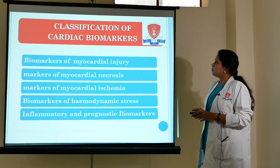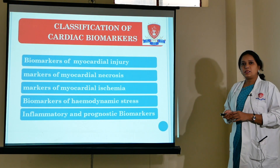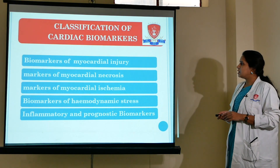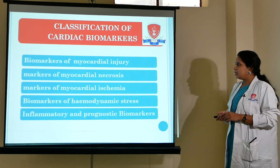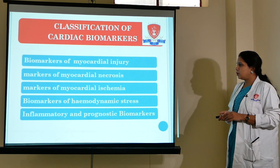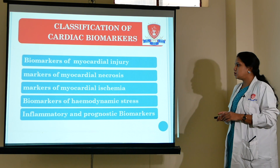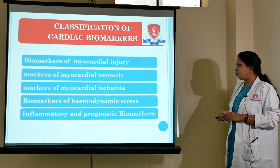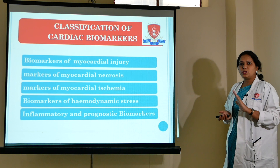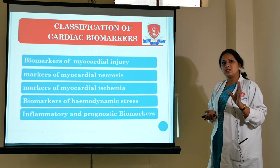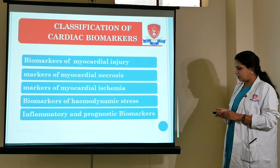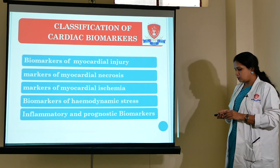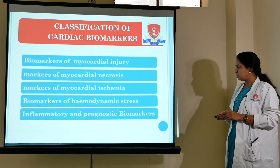Classification of cardiac biomarkers: they can be categorized as markers of myocardial injury, markers of myocardial necrosis, markers of myocardial ischemia, markers of hemodynamic stress, and inflammatory and prognostic markers. So it is not simply that every marker is just for myocardial infarction — they can be condition-specific, covering ischemia and also serving as prognostic markers.